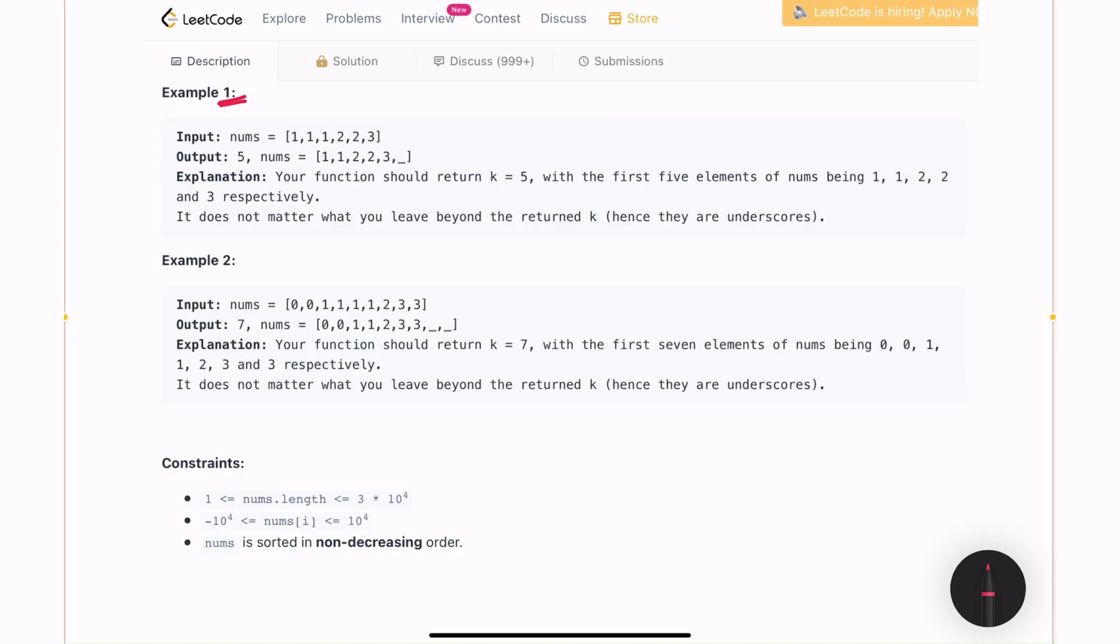In example number 1, we are given an array nums having 3 ones, 2 twos and 1 three. Based on the problem statement, we need to modify the nums to this format: we are having 2 ones, then 2 twos, then 1 three. And whatever is there after this 3 stays the same. Because there are 5 valid numbers that we identified, we are returning 5. Even though we had 3 ones in the original input, we are only allowed to have at max 2 duplicate numbers. So we took only 2 in the output.